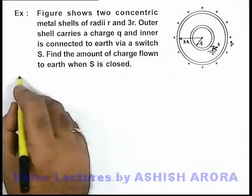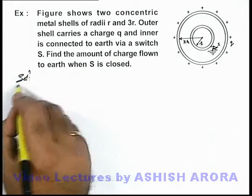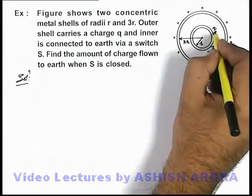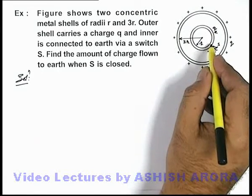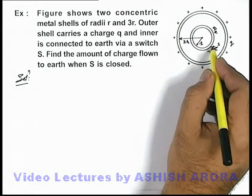When the switch is closed, earth will supply a charge qe onto the inner shell such that its final potential should be equal to zero.